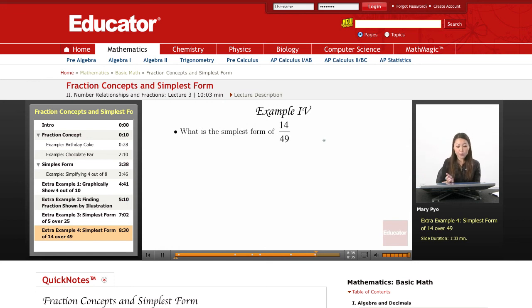Okay, so to find the simplest form of 14 over 49, we are going to look for a common factor, meaning we're going to look for a number amongst 14 and 49 that can be multiplied to get 14 and can be multiplied to get 49. So a common factor between these two numbers would be 7.